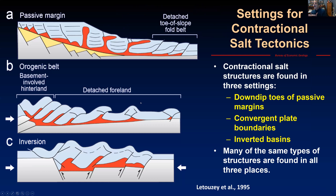Where do we see compressional fold belts detached on salt? There are three main settings. The first is at the down-dip toe of a passive margin: extension at the up-dip part causes everything to slide downhill, and at the down-dip end you get a fold belt. The best known examples are in the northern Gulf of Mexico — the Perdido fold belt and the Atwater fold and thrust belt. These fold belts exist at the down-dip end of almost all salt-involved passive margins, and in the last two decades a number of significant discoveries have been made in them.